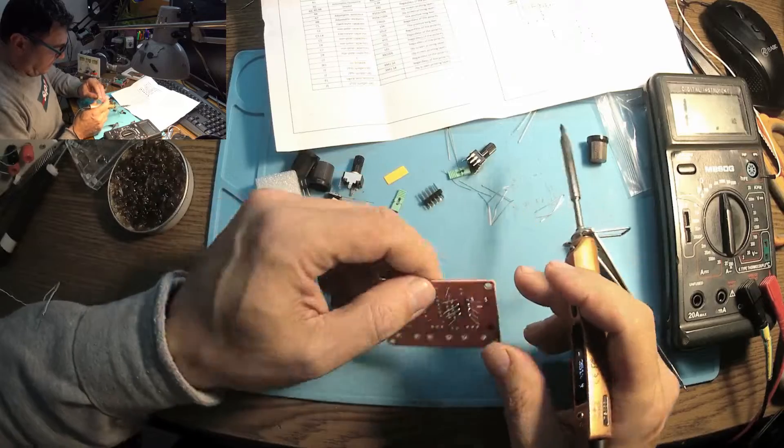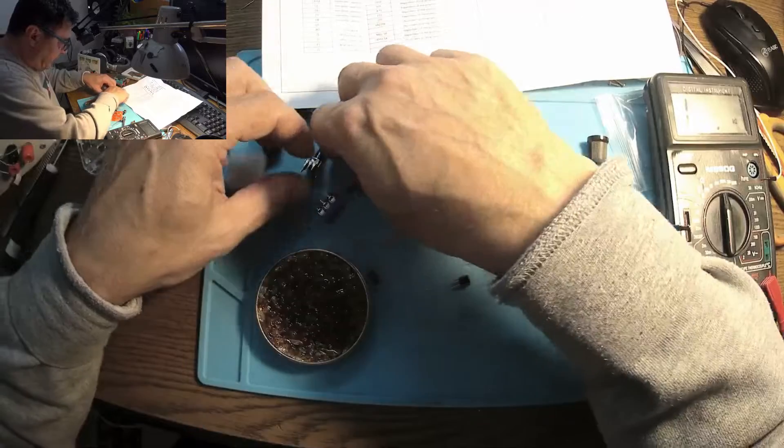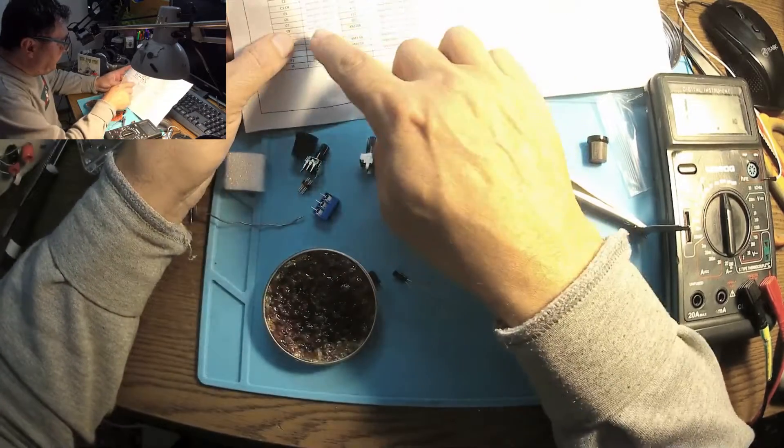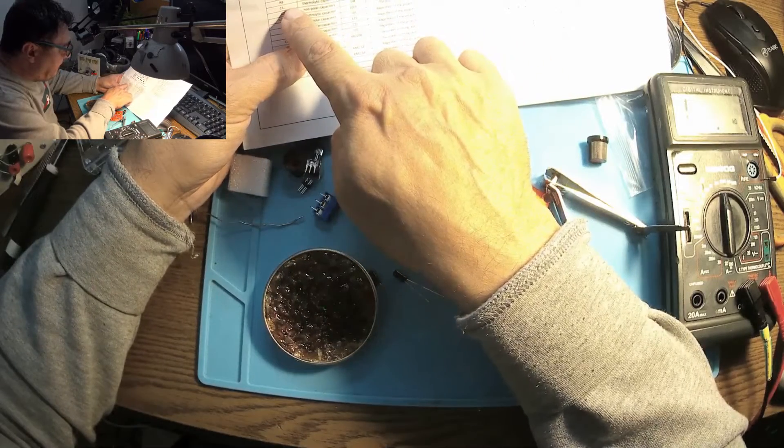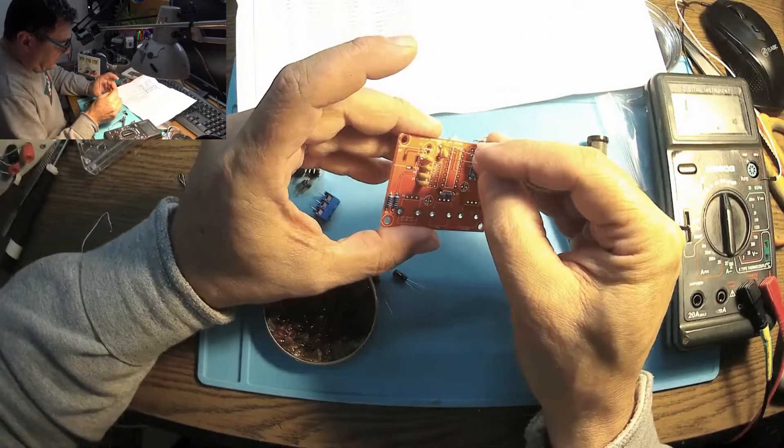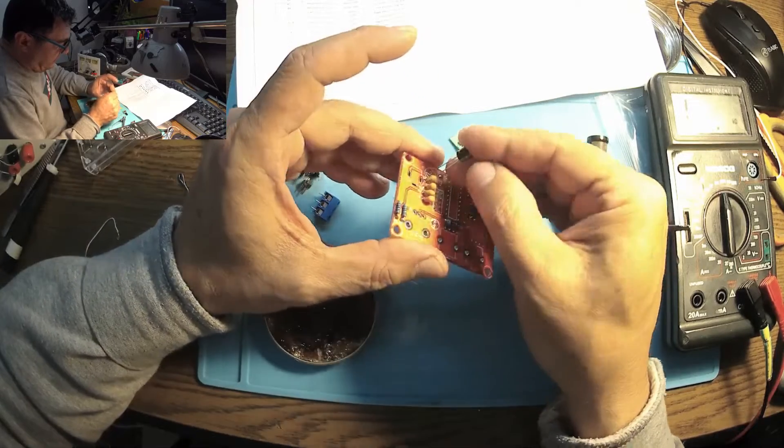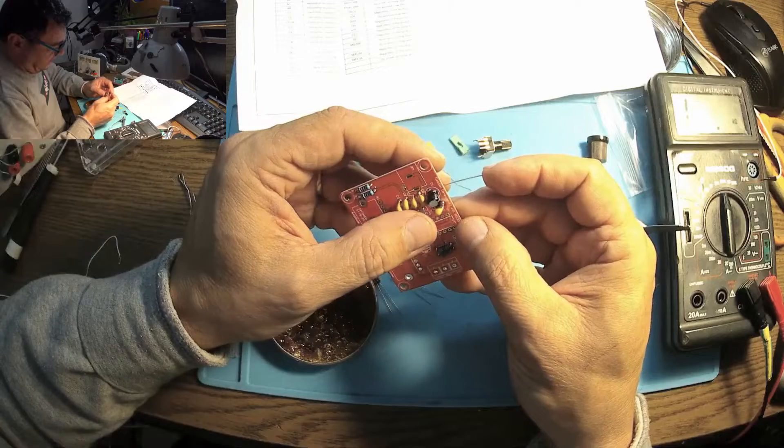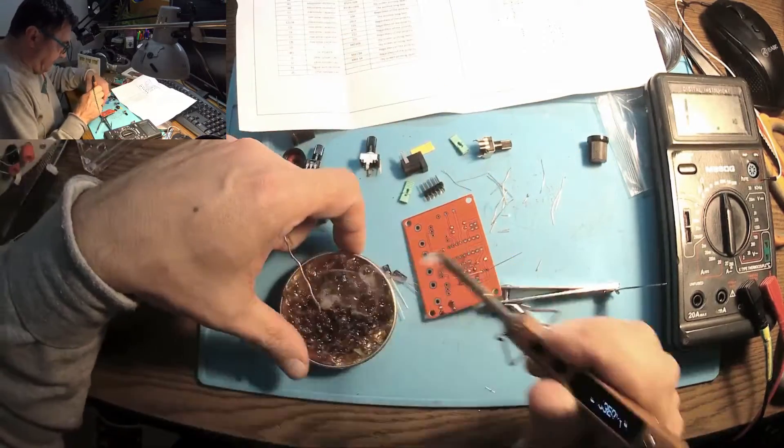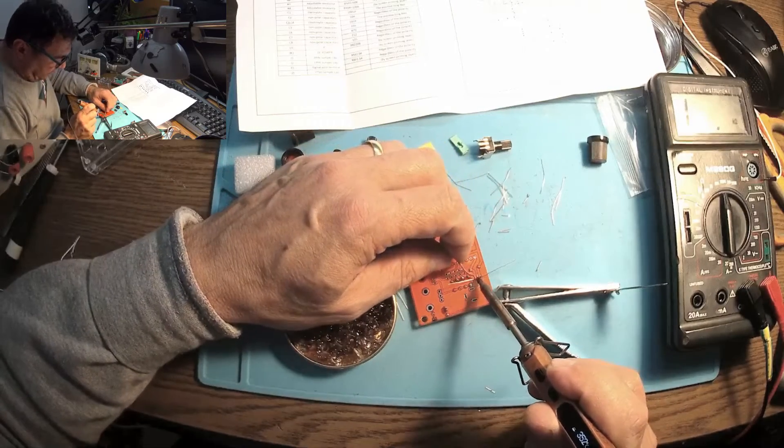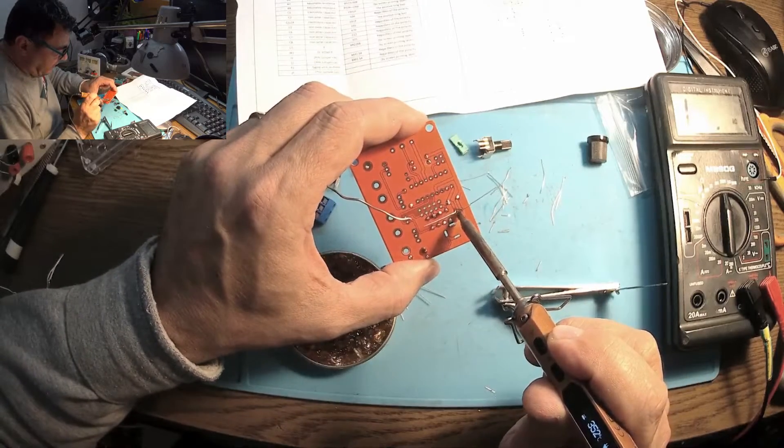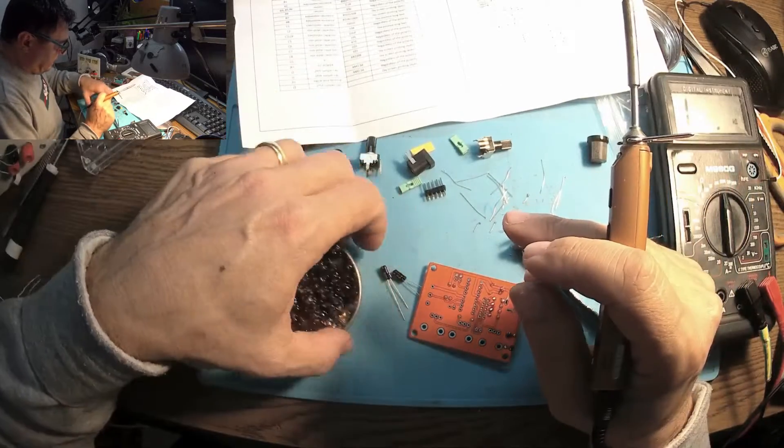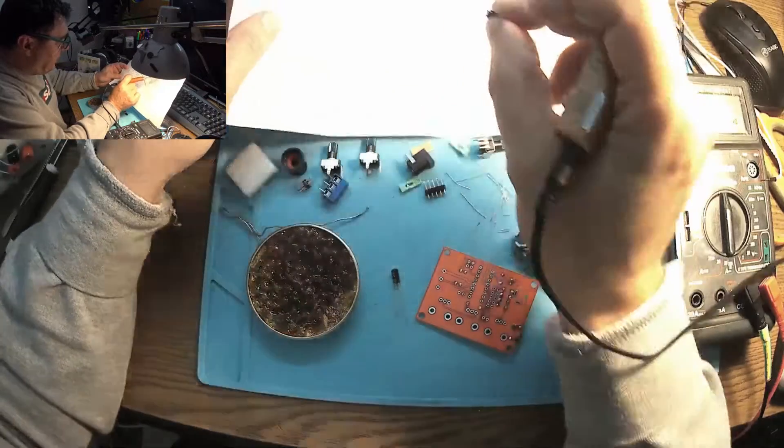Looking good. Capacitors in place, let's have the electrolytics. We got three of them. Let me start with this 100 microfarads at 16 volts, electrolytic 100 micro C1. Where is C1? The long one is plus always, but we also have a mark for the minus. Same story here. I have to be sure that the soldering is going deep in the hole.